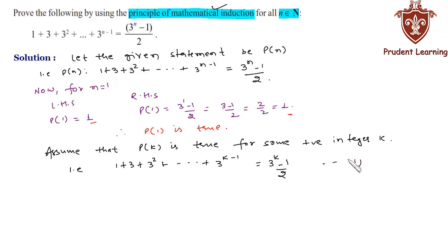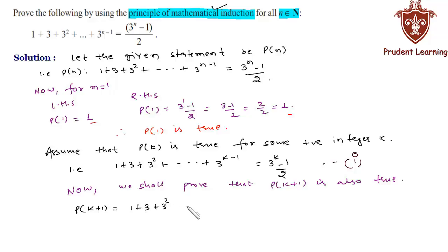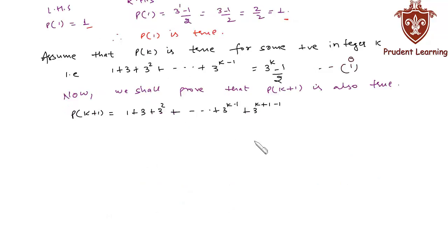Our third step is to prove that P(k+1) is also true. We shall prove that P(k+1) is true, that is: P(k+1) = 1 + 3 + 3² + ... + 3^(k−1) + 3^((k+1)−1).